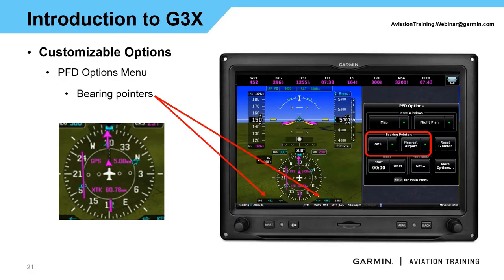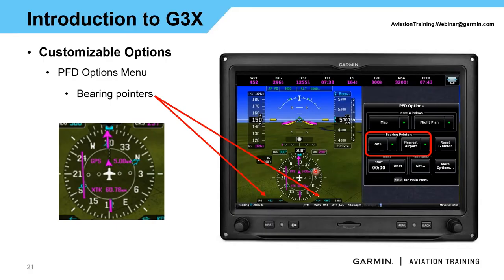The next option is bearing pointers. On bigger panels like TXI and G1000, bearing pointers reference GPS or a VOR or ground-based nav source. G3X gives a few more options — I can still do a bearing pointer for GPS or a VOR, but another great option is setting it to nearest airport. I can set bearing 2 to nearest, and looking down at the HSI, it tells me the airport, the distance, and shows the double-line bearing pointer. I know where that nearest airport is without turning anything else on — fantastic option for the G3X system.